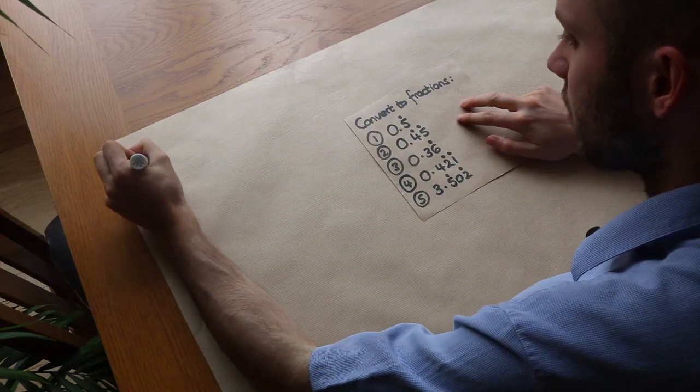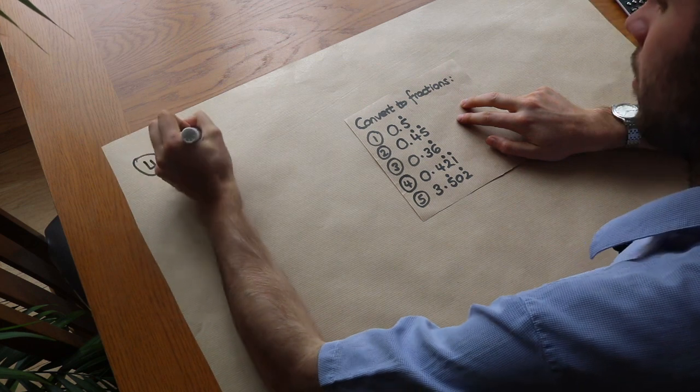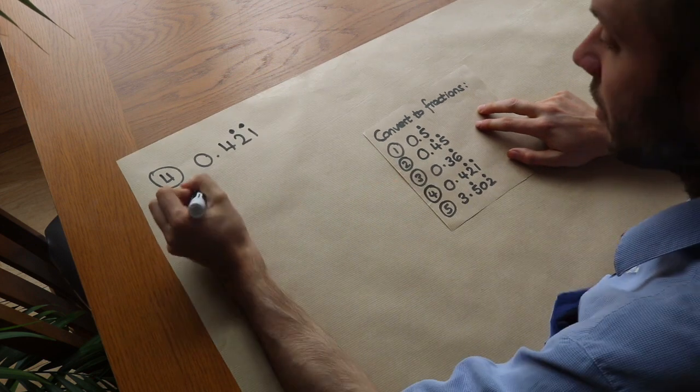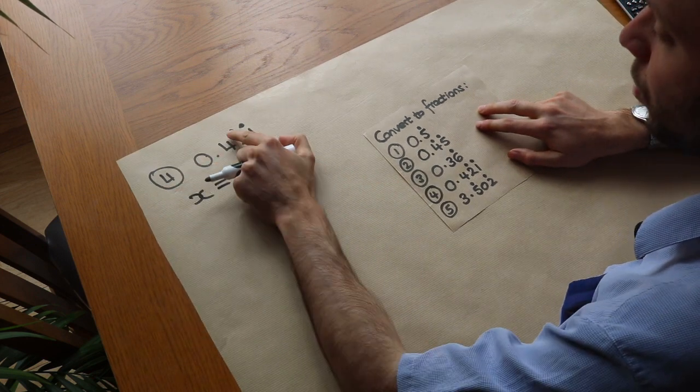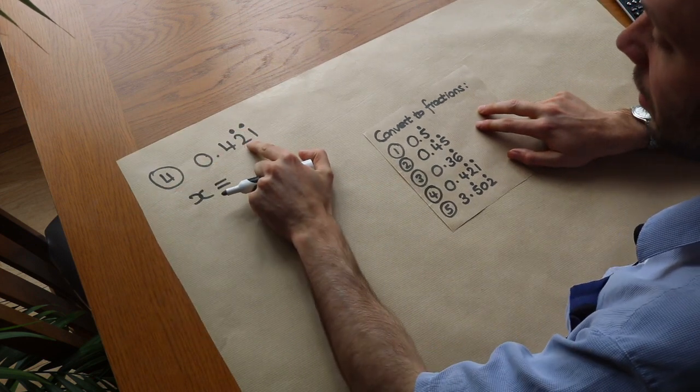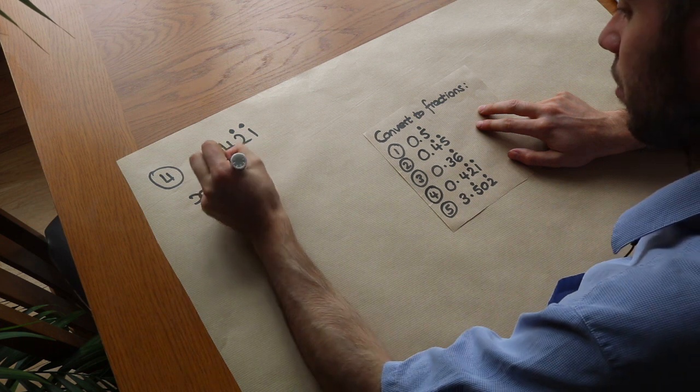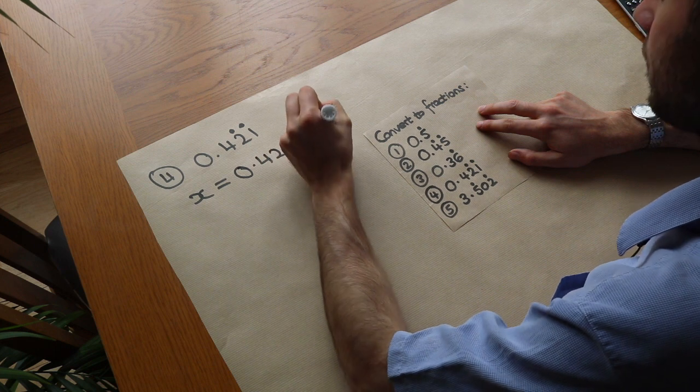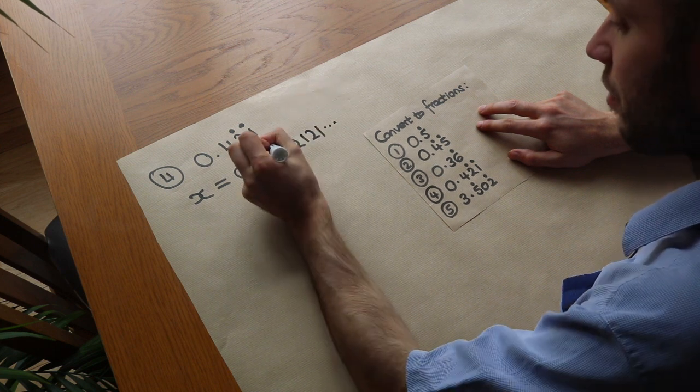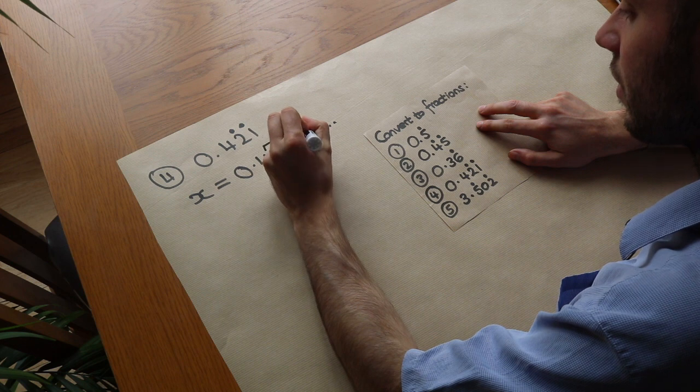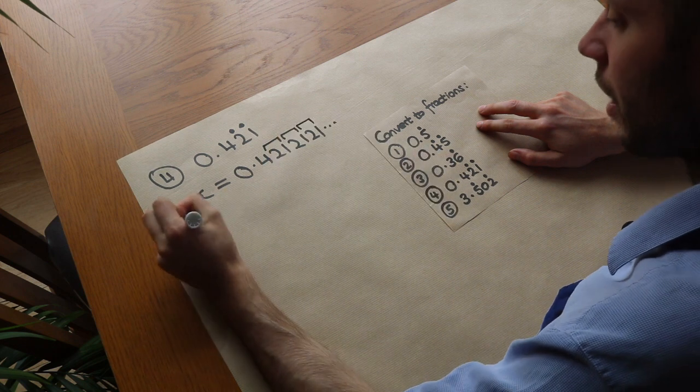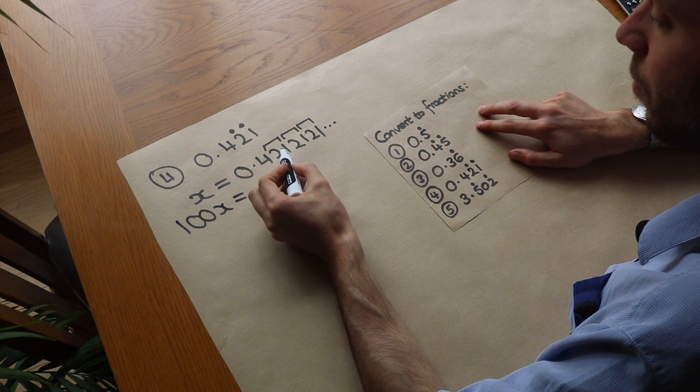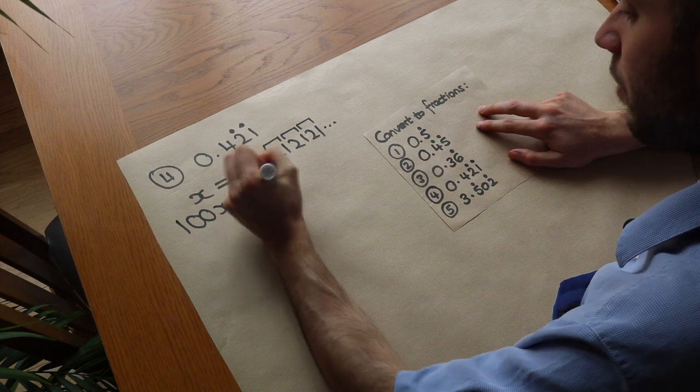Let's do the last two. We've got 0.421 recurring where the 2 and the 1 are recurring. So that means that between these two dots the digits are recurring. So the 2 and the 1 are repeating. So we've got 0.4212121 etc. Now it's repeating every two digits. And so we times by 100. So 100x is move the decimal point twice. It's 42 point. Make sure these line up.